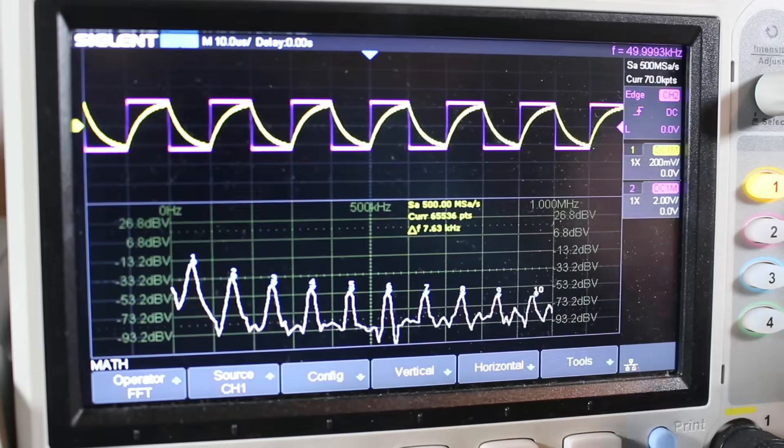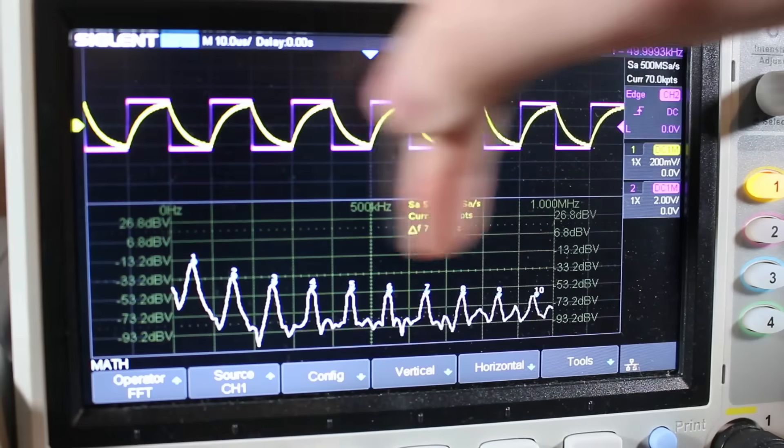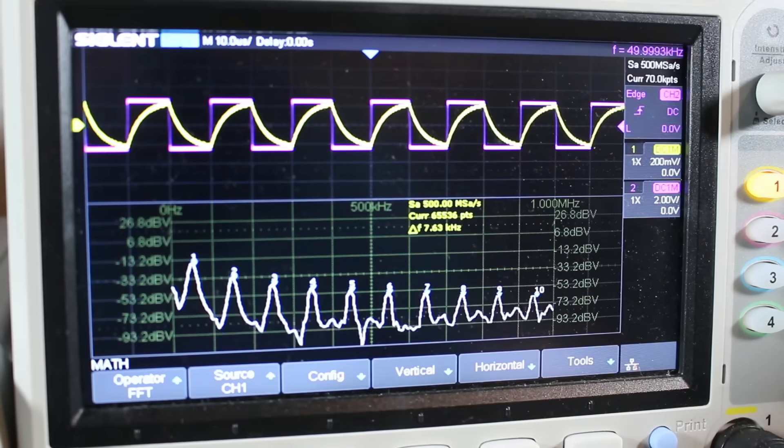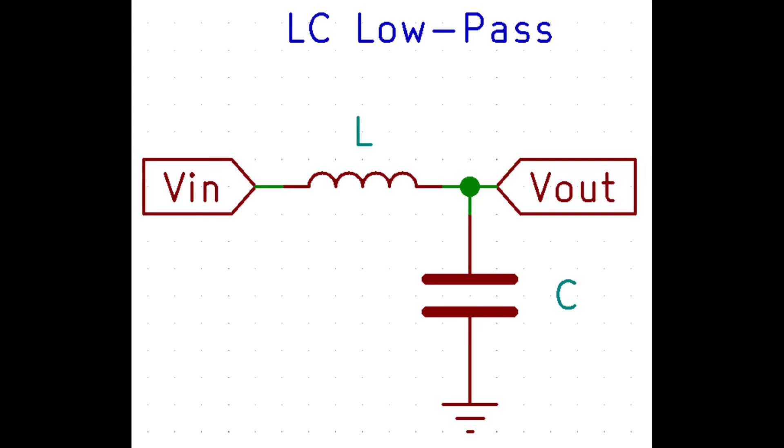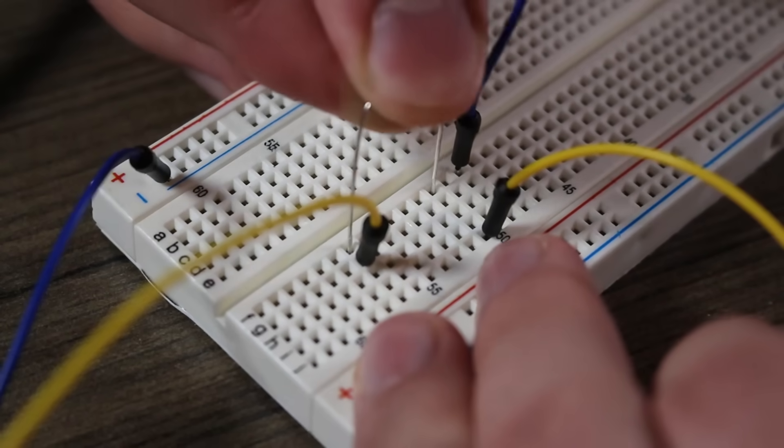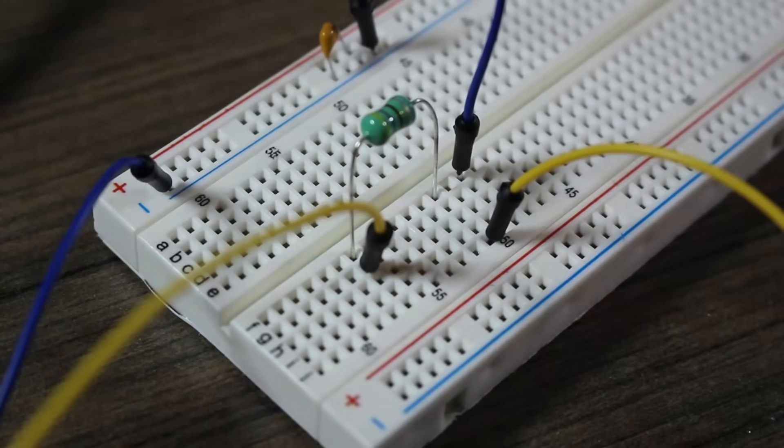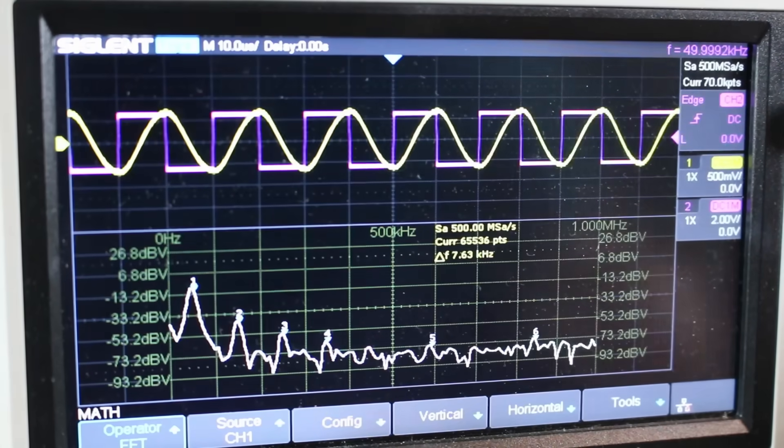As you can see from the output of our filter, it isn't exactly a sine wave. This is because our RC filter doesn't have that steep of a cutoff. Let's instead take a look at an LC low-pass filter. These filters have a steeper cutoff, so we should get a little more sine-like shape on the output. Let's use an inductor of 470 microhenry and a 22 nF capacitor. As you can see, the resulting sine wave is much better than the one that we got from the RC filter.